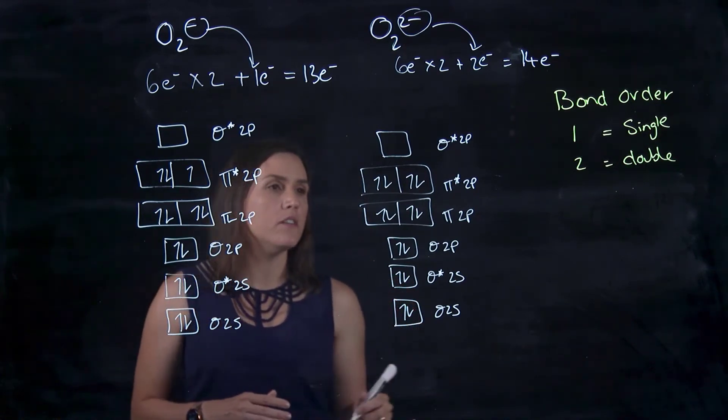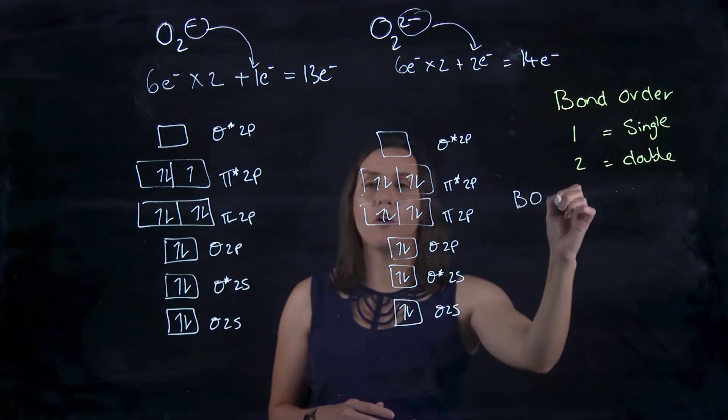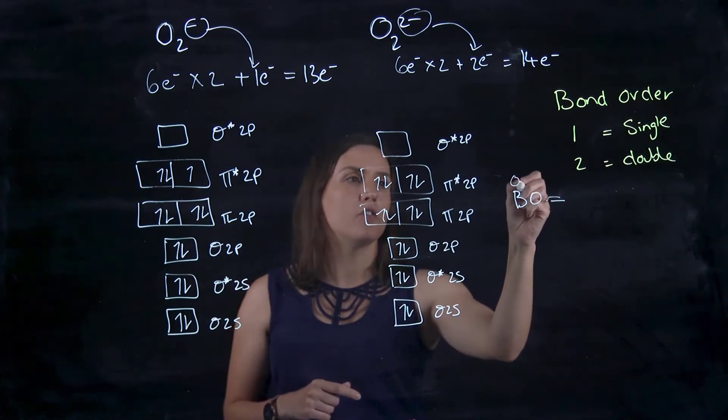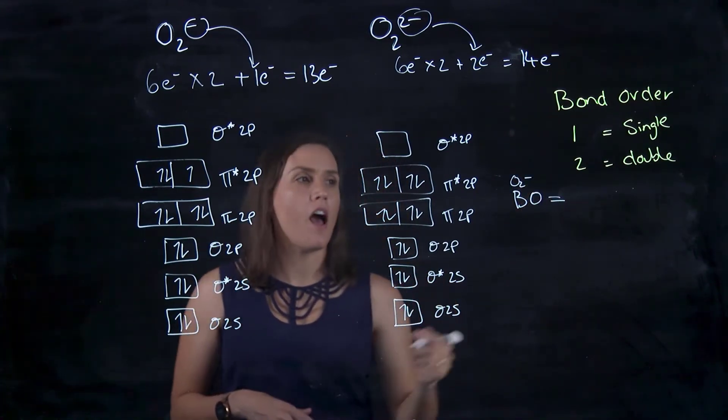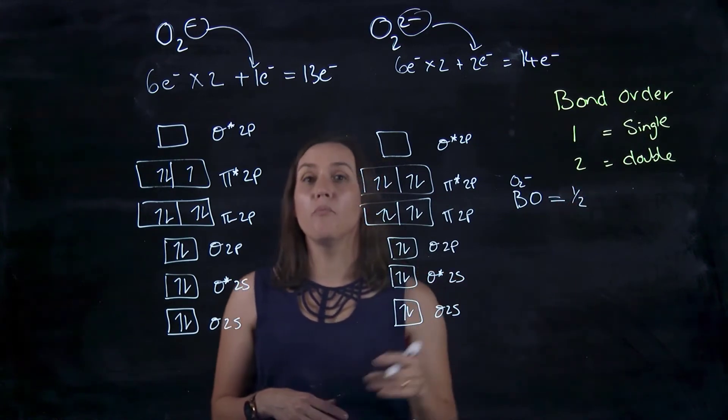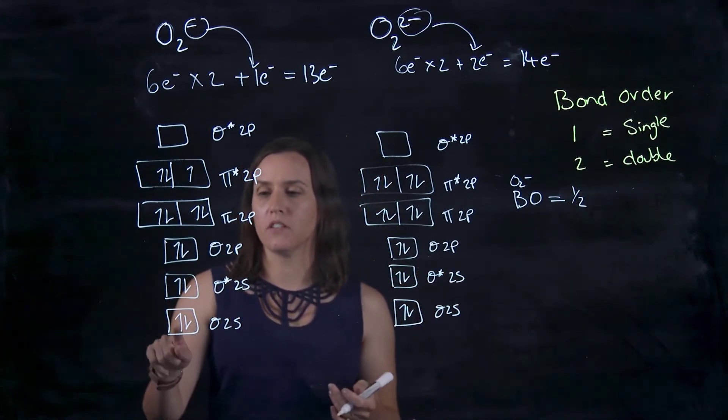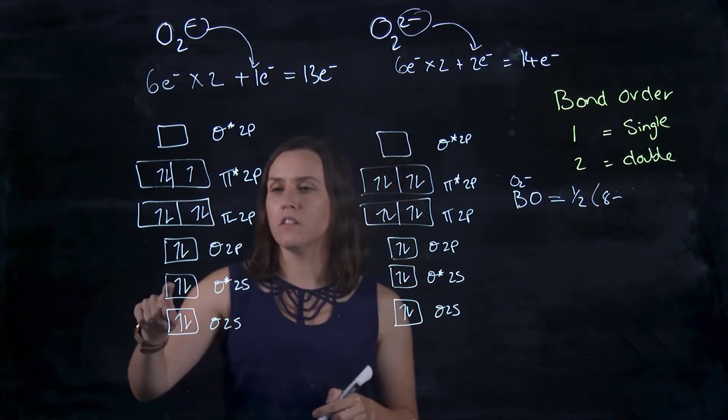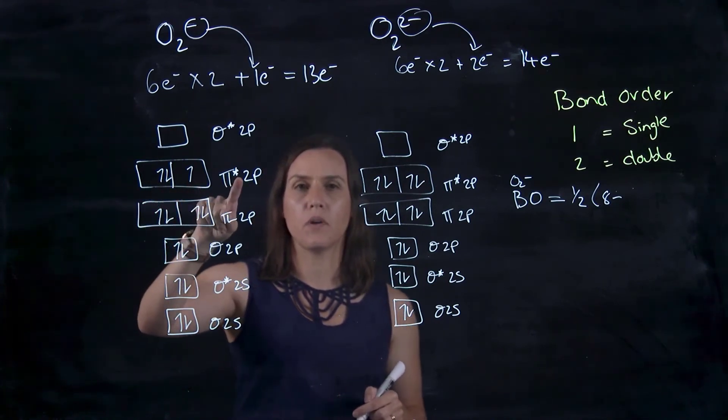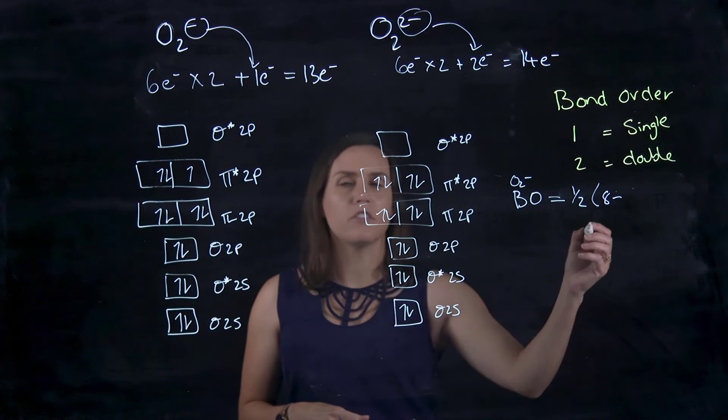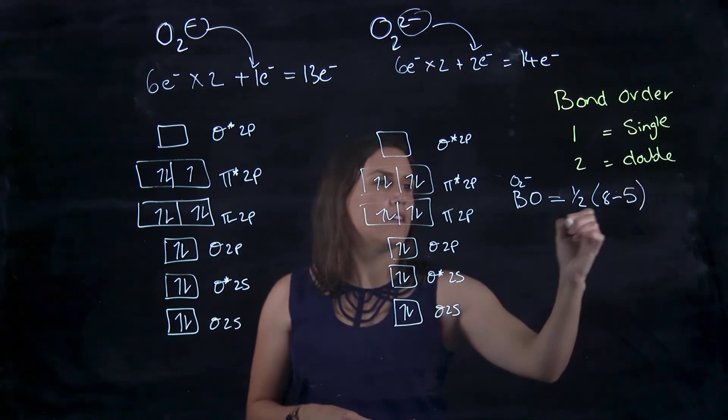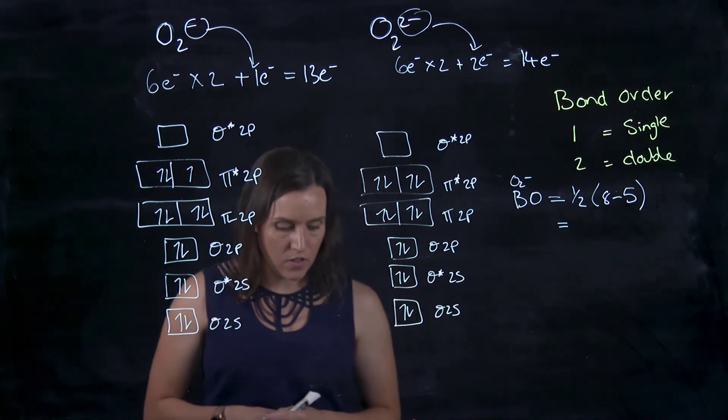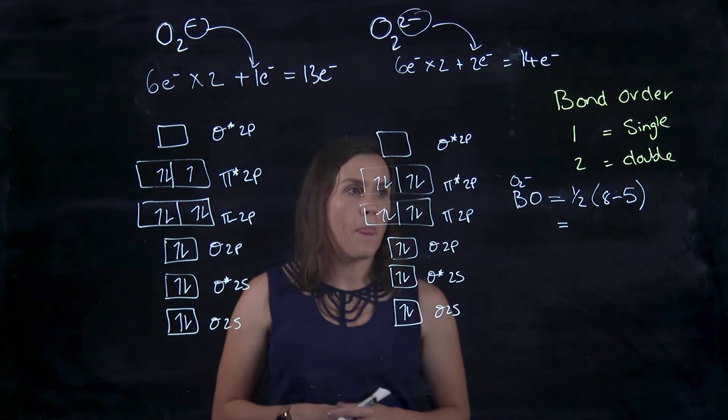So let's look at my bond order. So our bond order, I'll abbreviate with BO because I'm running out of space. So first of all, let's do our O2 minus. So we've got half the number of bonding, subtracting our anti-bonding. So bonding, two, four, six, eight. Our anti-bonding, two, four, five. So these are the ones with the little star or asterisk there. So we've got five. Okay, so that would give us the value of 1.5.